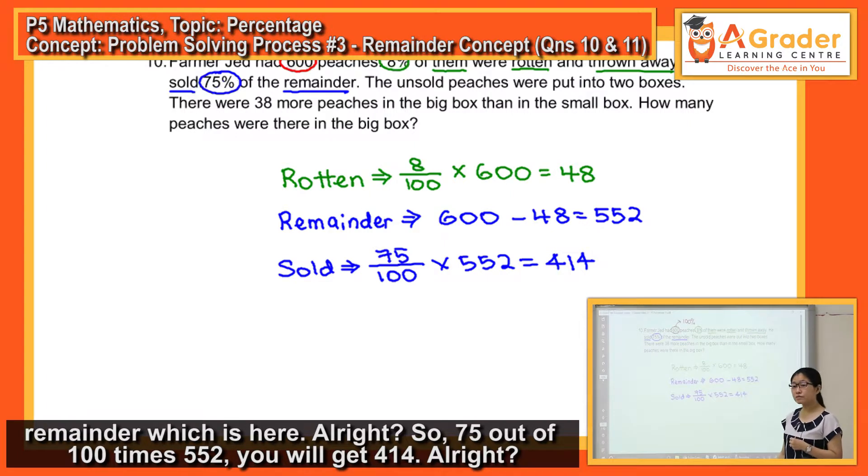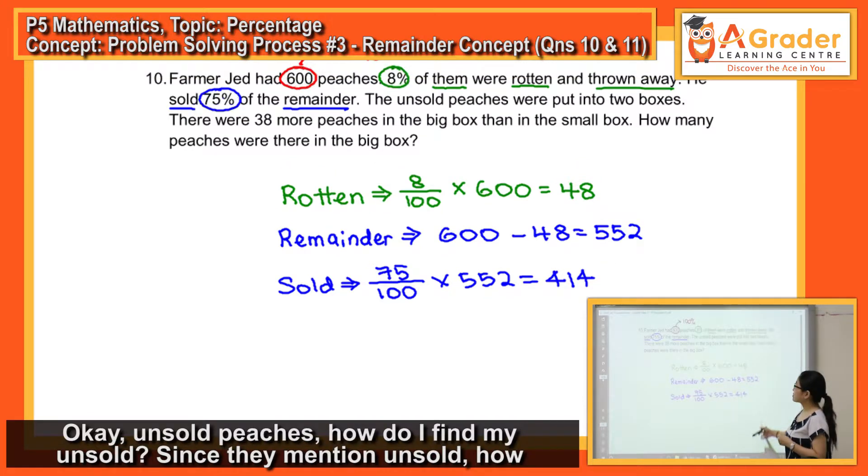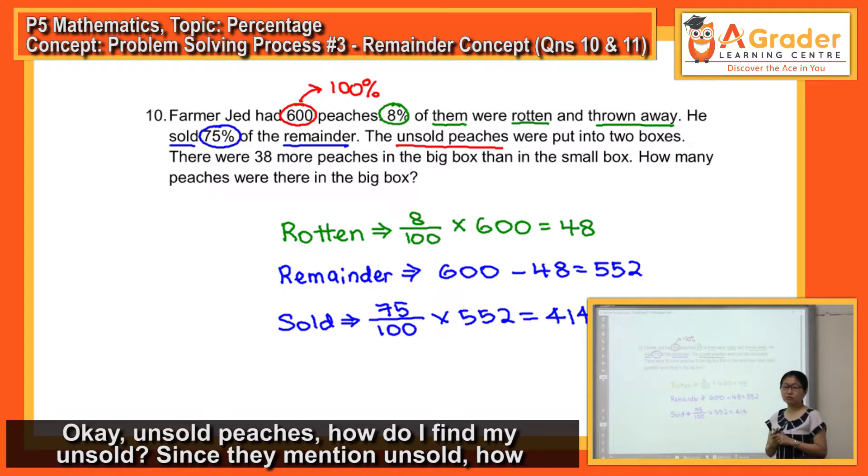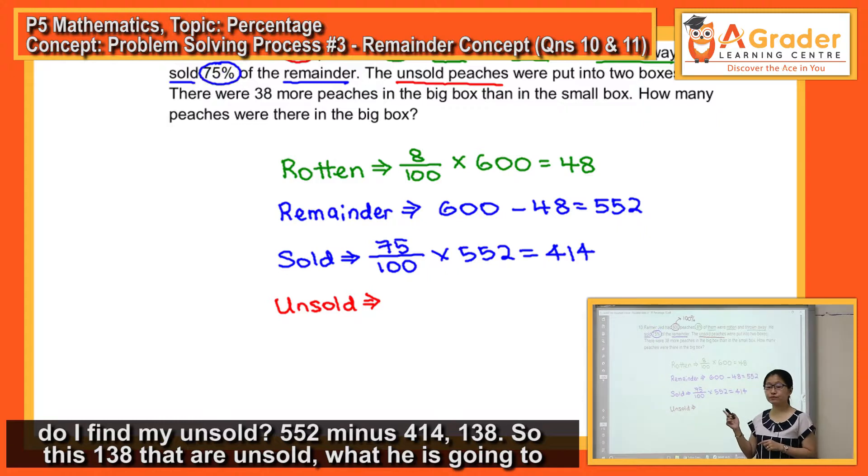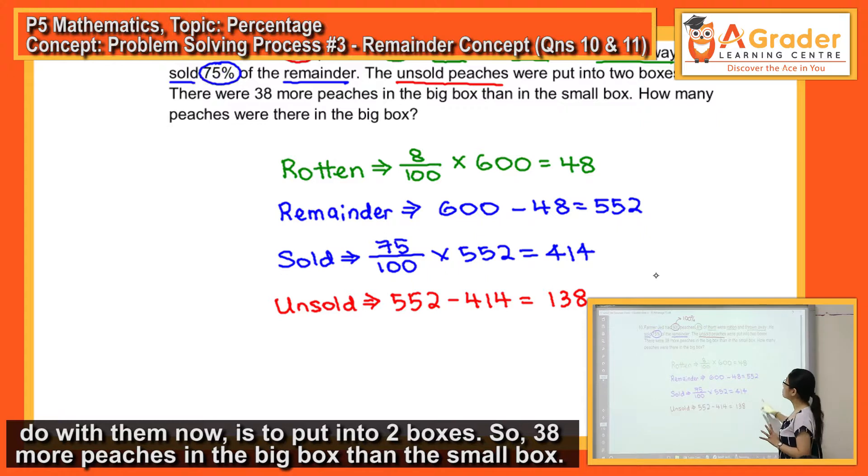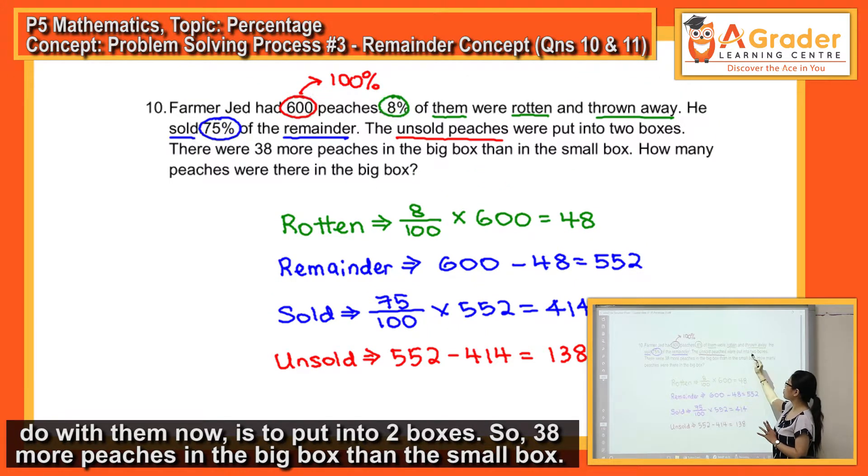Unsold peaches, how do I find my unsold? Okay, 552 minus 414 equals 138.